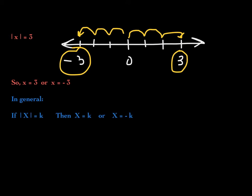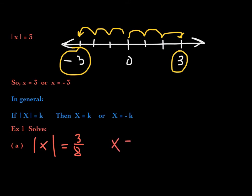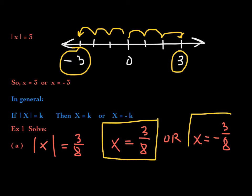Let's look at our first official example: the absolute value of x equals 3/8. Using our generalization, x will either equal 3/8 exactly, or x will equal the opposite of 3/8. These are our two solutions: either x is 3/8 or x is negative 3/8. The absolute value of 3/8 is 3/8, and the absolute value of negative 3/8 is also 3/8.